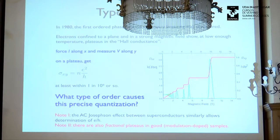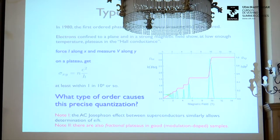On these plateaus, the value is very simple: if I convert it to transverse conductivity it's an integer times e²/h. Second, these plateaus are extremely flat — the value in a properly chosen sample is quantized to about one part in a billion. That was historically the second example of very precise quantization in a macroscopic system. The reason why this is surprising is this is by no means a perfect material — in fact you need a little bit of disorder to get nice big plateaus.